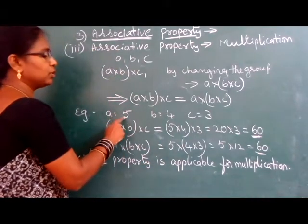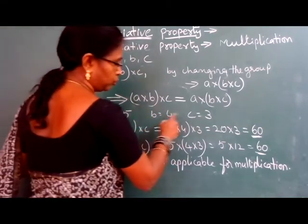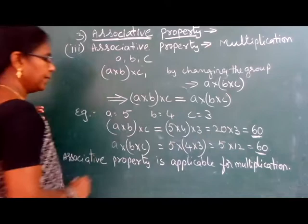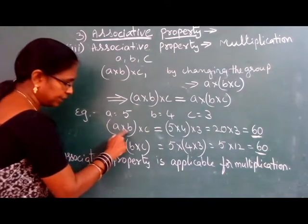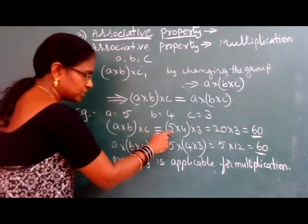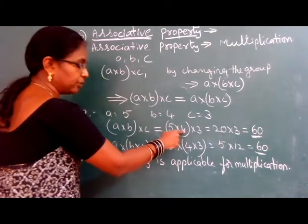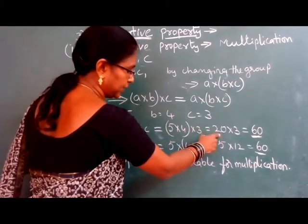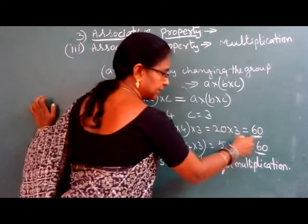For example, A is equal to 5, B is equal to 4, C is equal to 3. Now first, A into B into C. Here first group 5 into 4, we have to multiply 5 into 4, 20 into 3, that is 60.